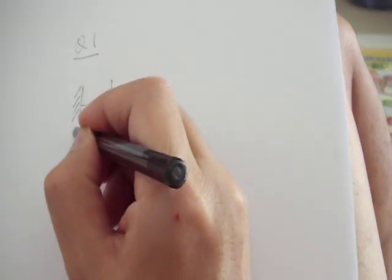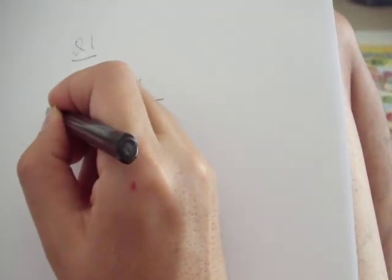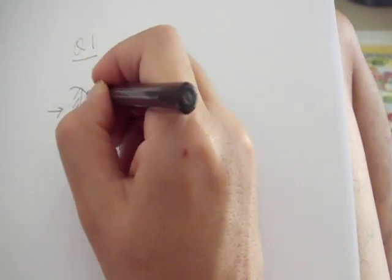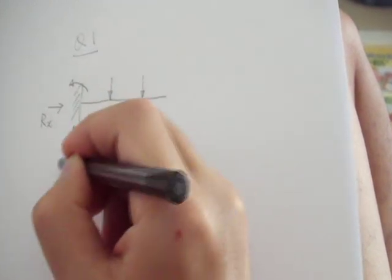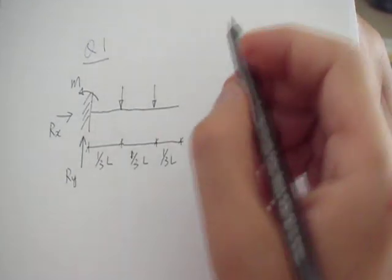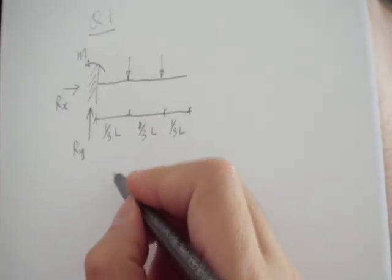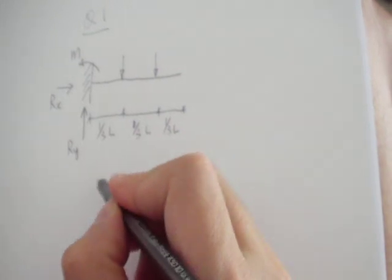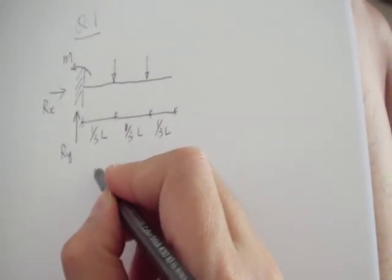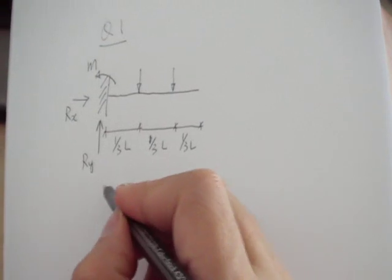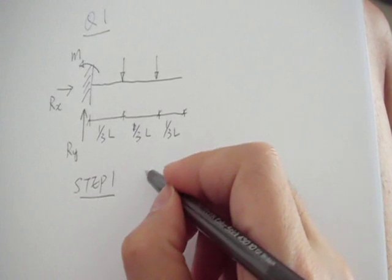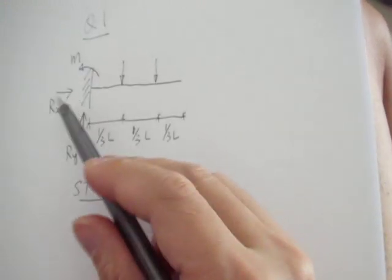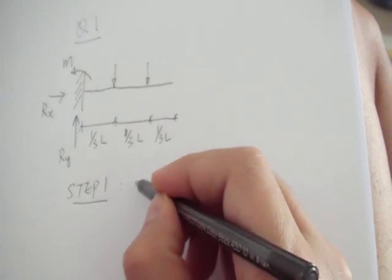So as this end is fixed, you should realize there are three reactions: Rx, Ry, and the fixed end moment M. So your first step — suppose you're already familiar with the sign convention, so I'm not going to write down the sign convention anymore. In step one, you calculate all these reactions using equilibrium.